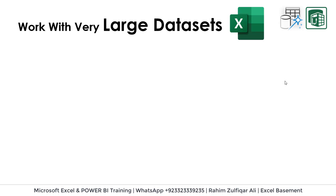A lot of Excel students and professionals assume that in one Excel worksheet there are only 1 million rows, and if we have large data sets — for example, 2 million, 4 million, or 10 million rows — then how can we fit them in one sheet? Technically this is right, because there is only 1 million rows per worksheet in an Excel workbook. But if you have large data sets, you can use Power Query to get the data and then move that data to Power Pivot, rather than pasting it onto a normal spreadsheet.